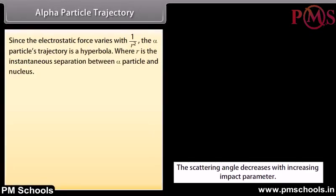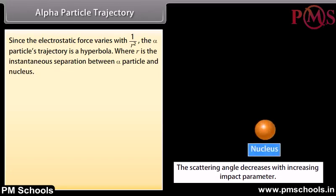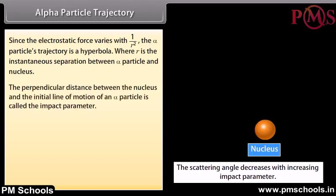Alpha particle trajectory. Since the electrostatic force varies with 1/R², the alpha particle's trajectory is hyperbolic, where R is the instantaneous separation between the alpha particle and the nucleus. The perpendicular distance between the nucleus and the initial line of motion of an alpha particle is called the impact parameter.